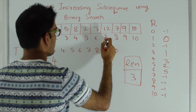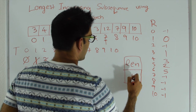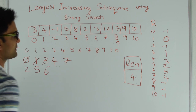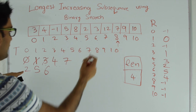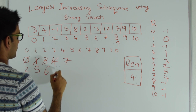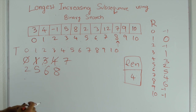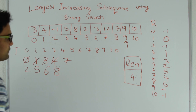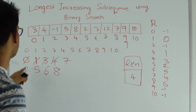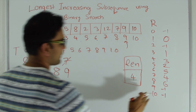i becomes 7. The value at index 7 is 12, which is greater than T[3] which is 8. So we put index 7 at T[4], increment length to 4, and record index 7 comes from index 4. Then i becomes 8: value is 7, not greater than 12. We find the ceiling of 7 in T, which is 8 at T[3]. We replace T[3] with index 8, and record index 8 comes from index 6. Finally, i becomes 9: value is 9, not greater than 12. The ceiling of 9 is 12 at T[4], so we replace T[4] with index 9, and record index 9 comes from index 8.